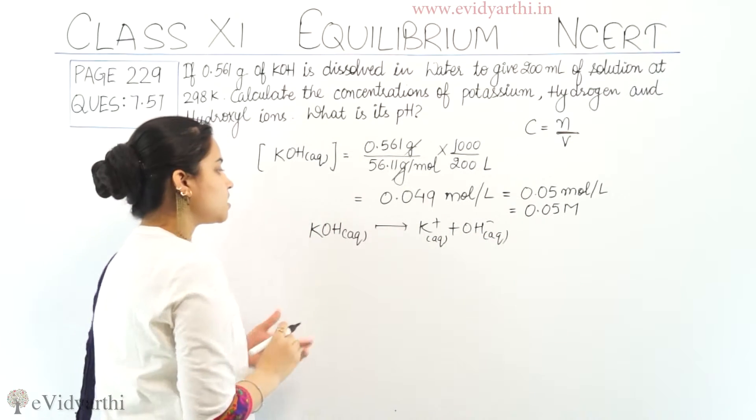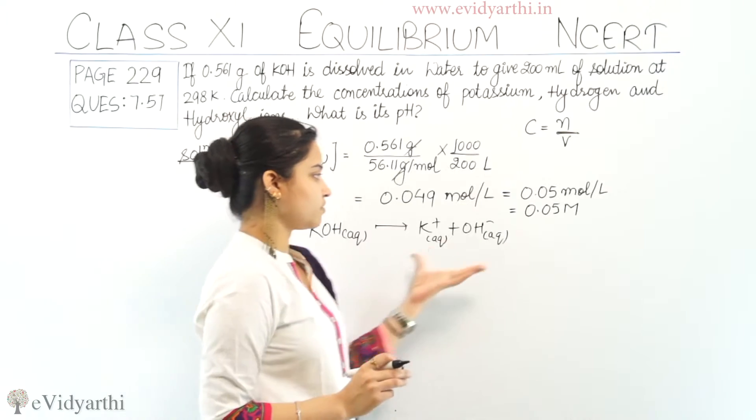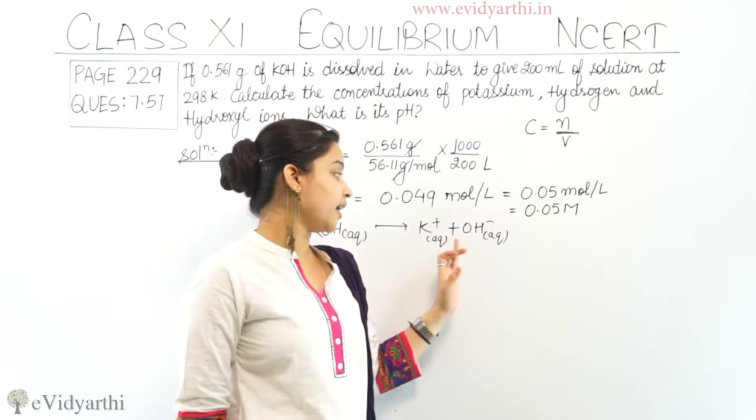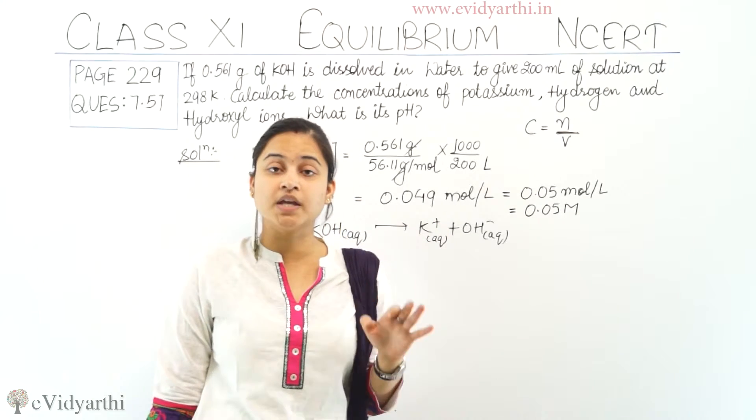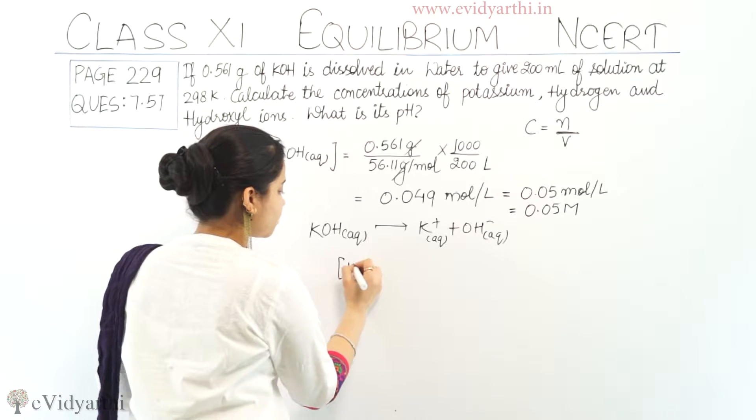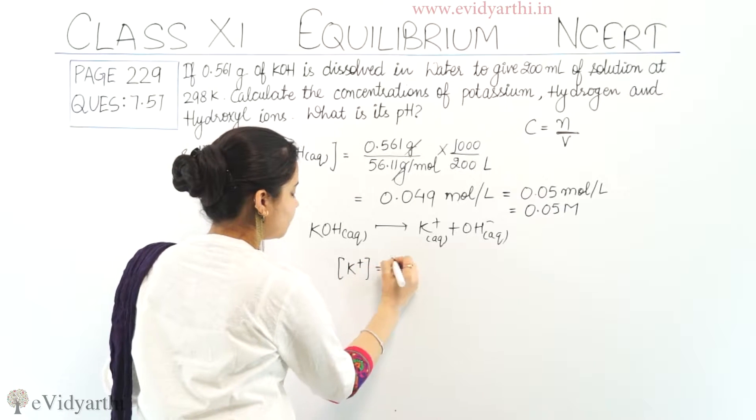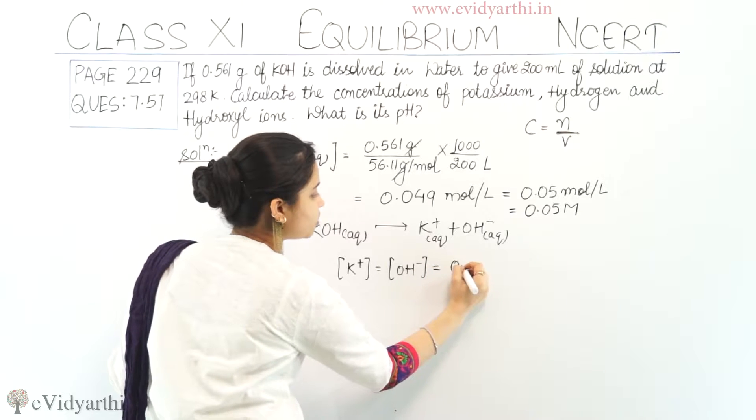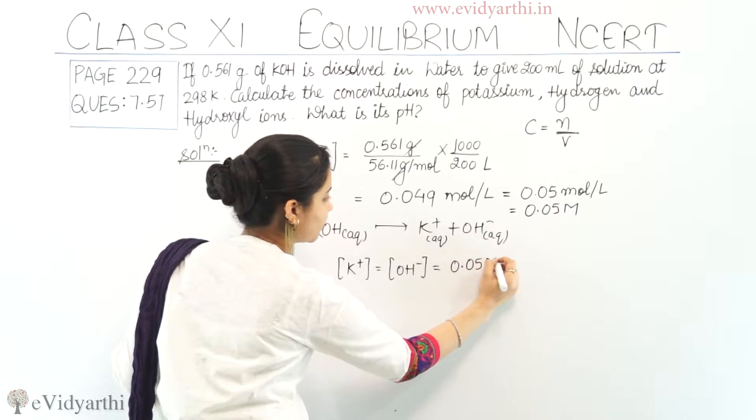Since KOH is having the molar concentration 0.05, so it is obvious ki potassium ion and hydroxide ion would have the same concentration. I can say concentration of potassium ion is equals to concentration of OH negative ion which is in turn equals to 0.05 molar.